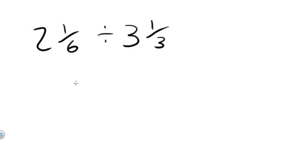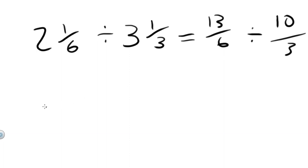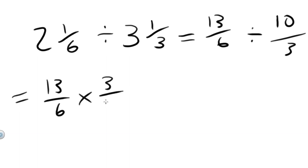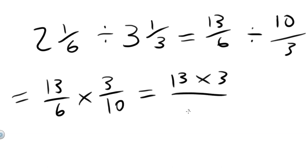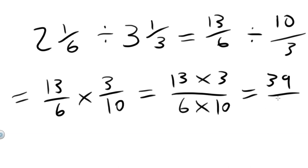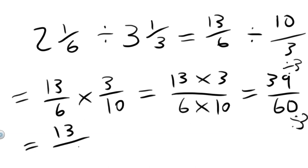Let's try another problem with two mixed fractions this time. The first thing we should do is convert both of them to improper fractions. So 6 times 2 is 12, plus 1 is 13. So 13 over 6, divided by — 3 times 3 is 9, plus 1 is 10 — 10 over 3. Let's multiply by the reciprocal. So 13 over 6 multiplied by 3 over 10, that's just the reciprocal of 10 over 3. Tops by tops: 13 times 3 over 6 times 10. 3 thirteens are 39, over 6 times 10 is 60. We can divide top and bottom by 3: 39 divided by 3 equals 13, over 60 divided by 3 equals 20. So 13 twentieths — that's our final answer.